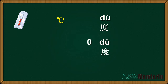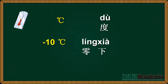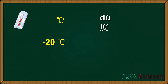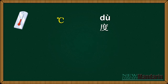0度是什么意思? Zero degree. How about minus 10? We have learned the word for down, below: 下. So 零下 means zero below. 零下十度 means minus 10 degrees. 零下二十度 means minus 20 degrees.